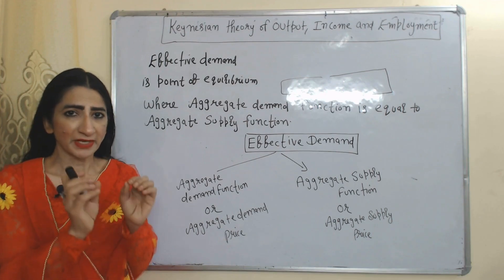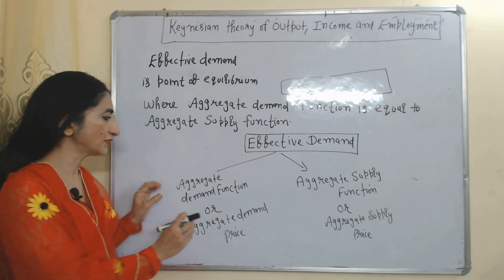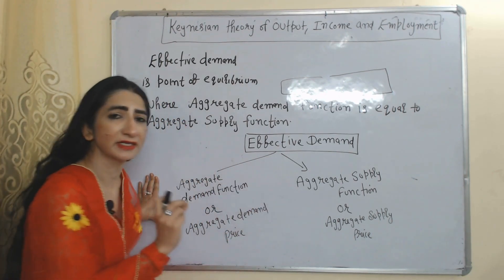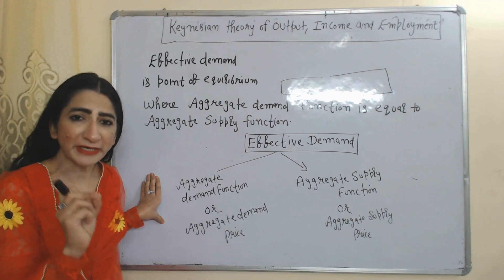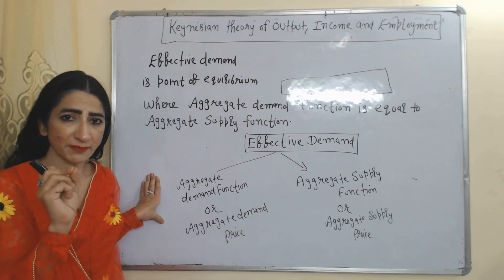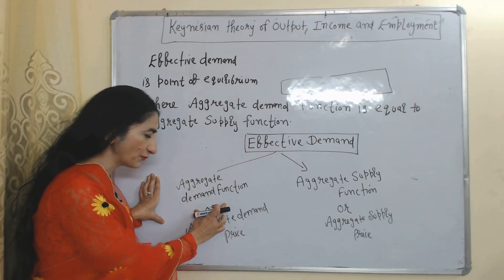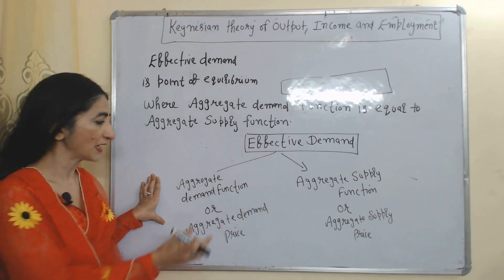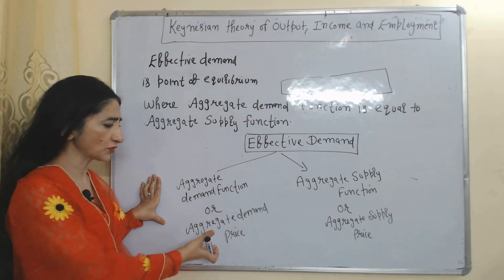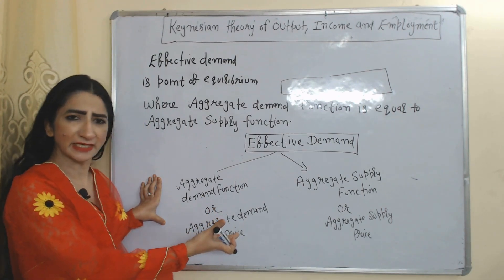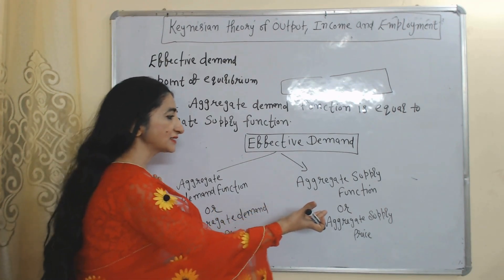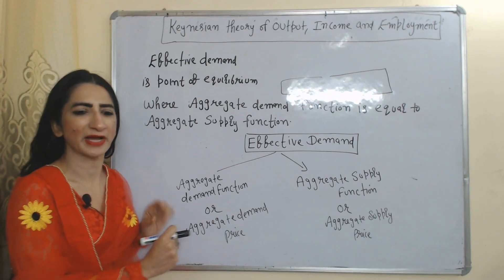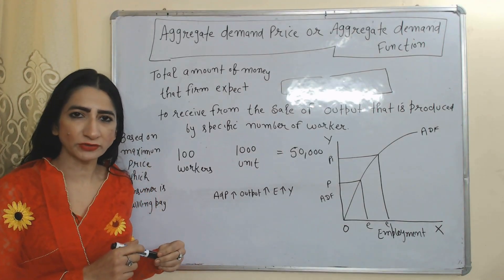Effective demand is a point where the aggregate demand function is equal to the aggregate supply function. Aggregate demand function is also known as aggregate demand price, and aggregate supply function is also known as aggregate supply price.